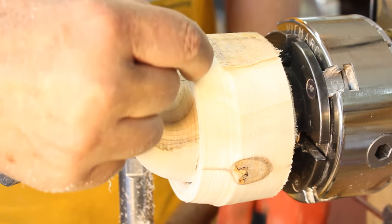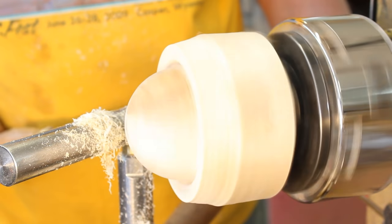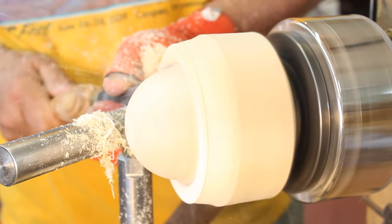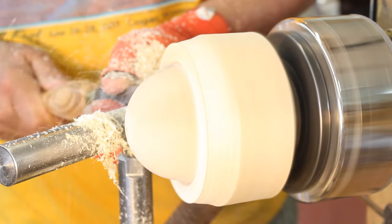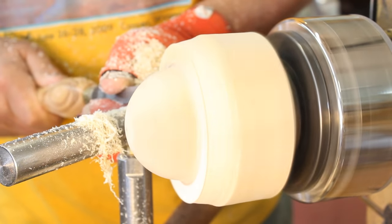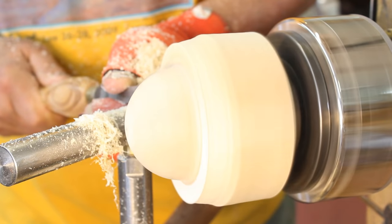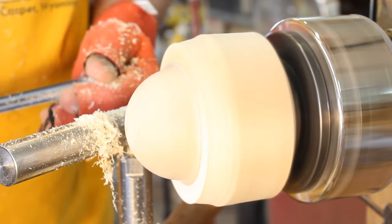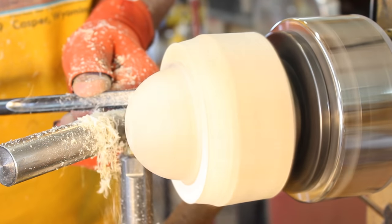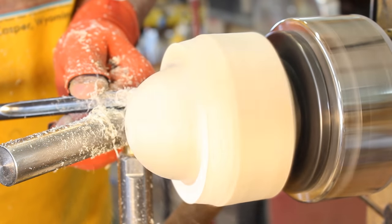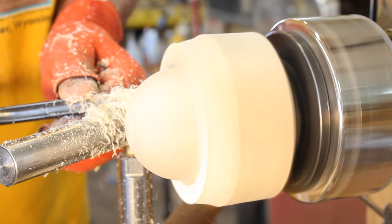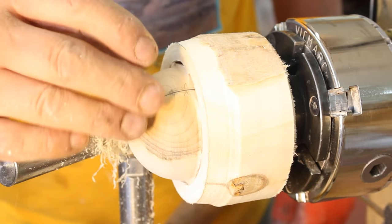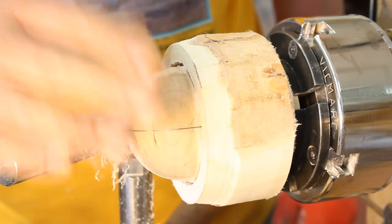Now I'm going to take just a little bit off this jam chuck and I think I'll use my parting tool. I don't want to take too much of that off and have that ball come out of there because I'll have a heck of a time truing it up again. I'm happy with that. A little bit more right there. I'm going to do a little bit of sanding right here while I have it in this orientation.